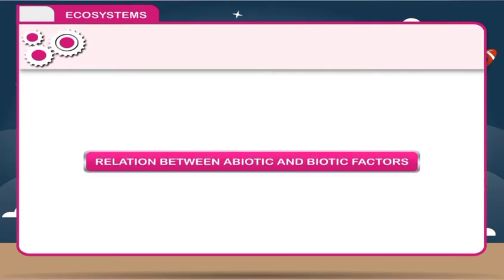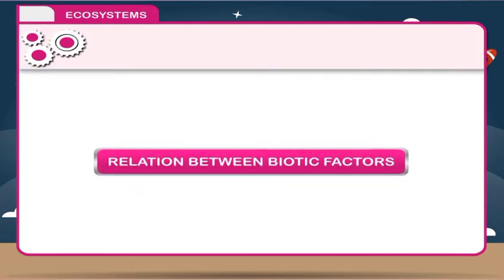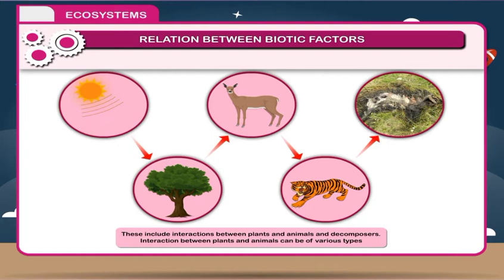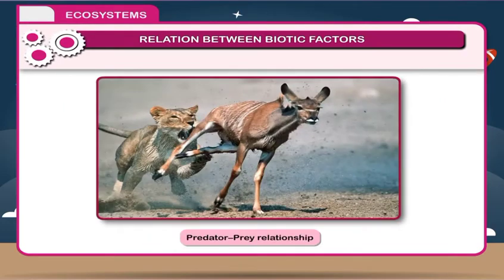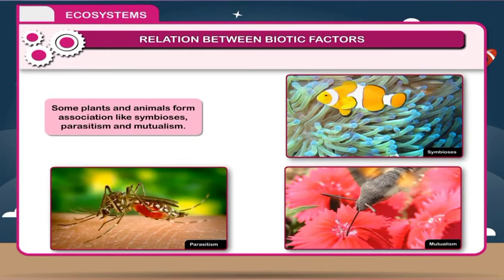Relation between Abiotic and Biotic Factors: All organisms are dependent on the environment, which in turn is influenced by the organisms it supports. All living and non-living components are interdependent. The abiotic factors play a very important role in the survival of plants and animals. These include interactions between plants, animals, and decomposers. Interaction between plants and animals can be of various types, such as predator-prey relationships. Plants and animals depend on each other for pollination, dispersal of seeds, and food. Some plants and animals form associations like symbiosis, parasitism, and mutualism.